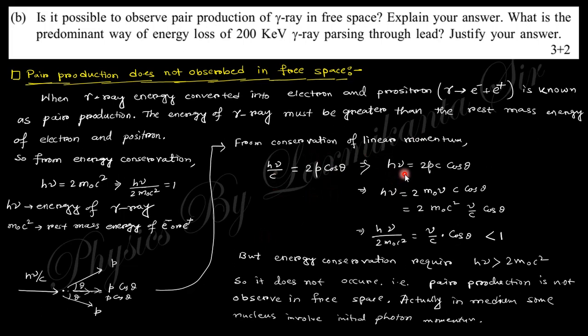From momentum conservation: hν/c = 2p·cosθ, so hν = 2pc·cosθ. Substituting p = m₀v gives a value less than 2m₀c². This contradicts the energy requirement hν ≥ 2m₀c². The energy and momentum equations contradict each other in free space. In a medium, nearby particles can balance this momentum, but in free space there is no such option — so gamma rays cannot produce pairs in free space.